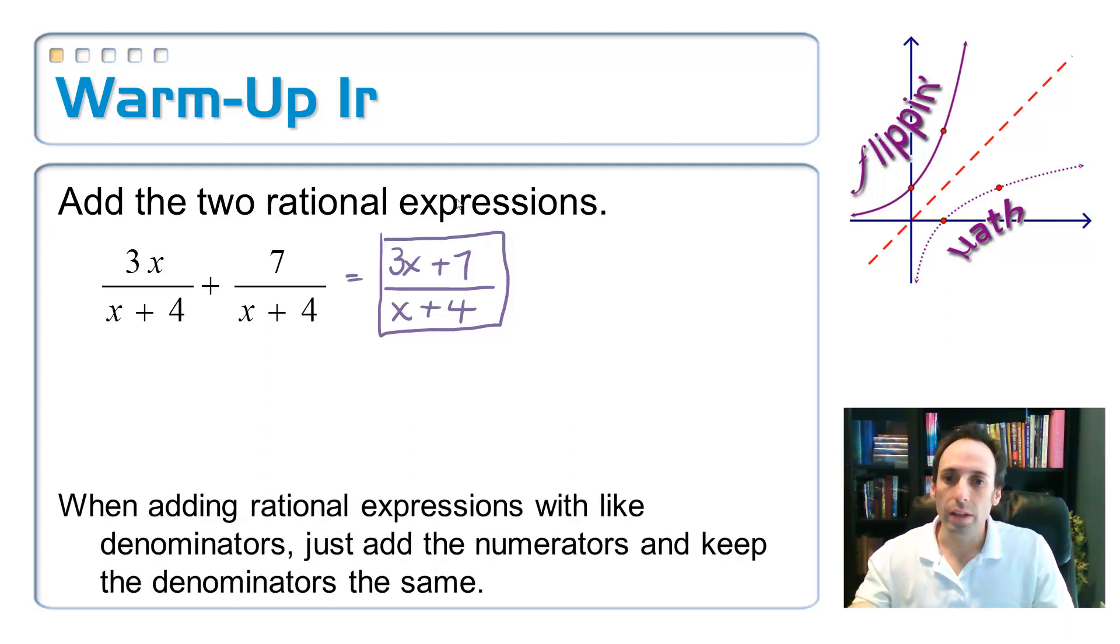So whenever you're adding or even subtracting rational expressions, when the denominator is the same, it's just like with regular fractions. You just keep the denominator the same, add up the two tops.